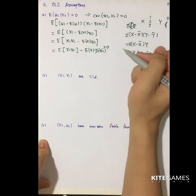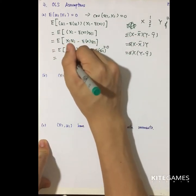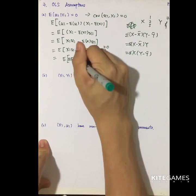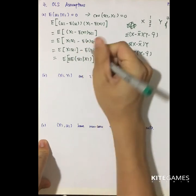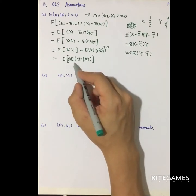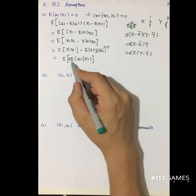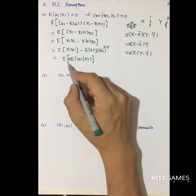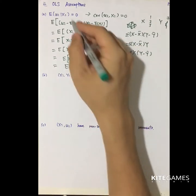The expected value of u_i is zero. For the first term, I need to use the law of iterated expectations. I take out x_i and calculate the expected value of u given x. Since x is given, it is no longer a variable — it becomes a constant, so I can take it out of the expectation. As a result, this is zero based on our assumption.